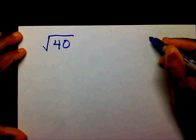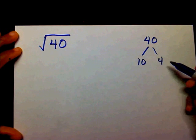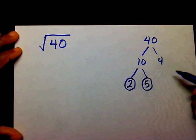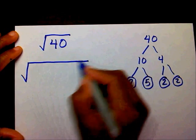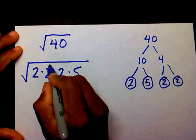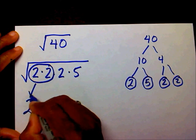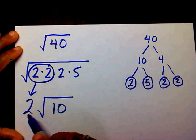Let's do a larger number: radical 40. I'm going to make a factor tree for 40 — 10 and 4. 10 is composite, so I break that down into 2 and 5, both prime. And 4 breaks down into 2 and 2, also prime. So underneath my radical I can write 2 times 2 times 2 times 2 times 5. Here's my perfect square: 2 times 2 is 4, radical 4 is 2, which goes on the outside. Inside I have 2 and 5, so 2 times 5 is 10. Radical 40 equals 2 radical 10.